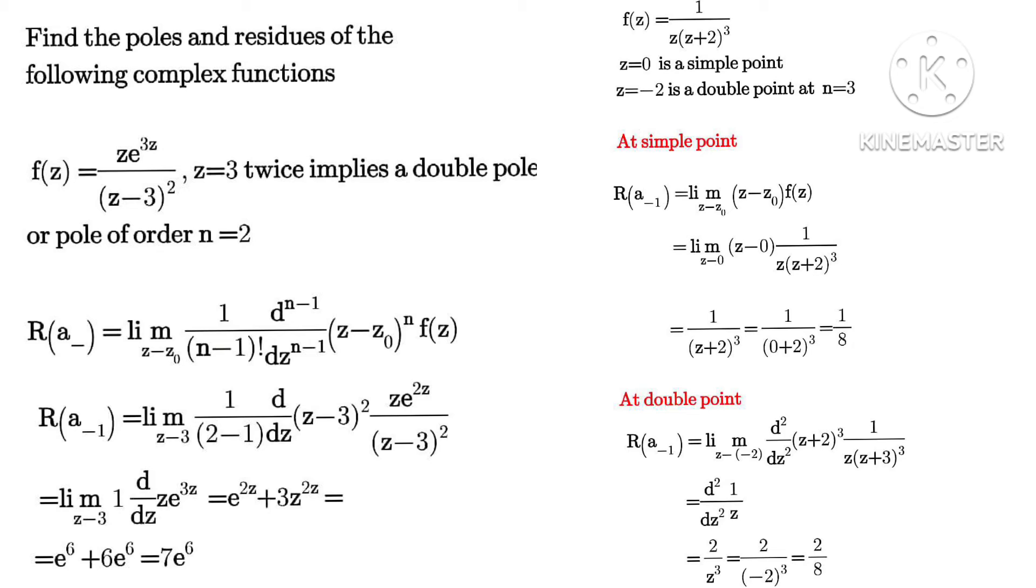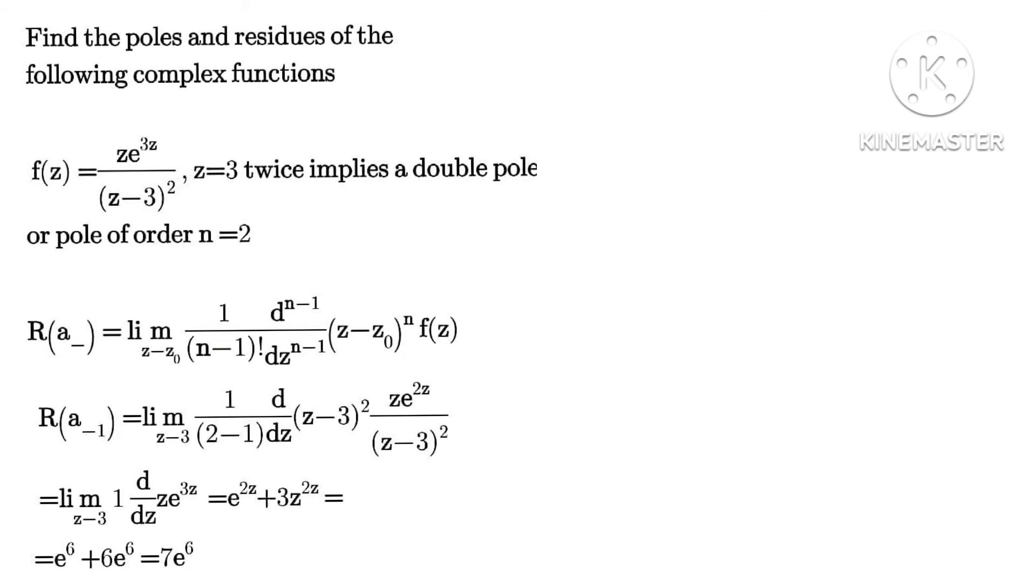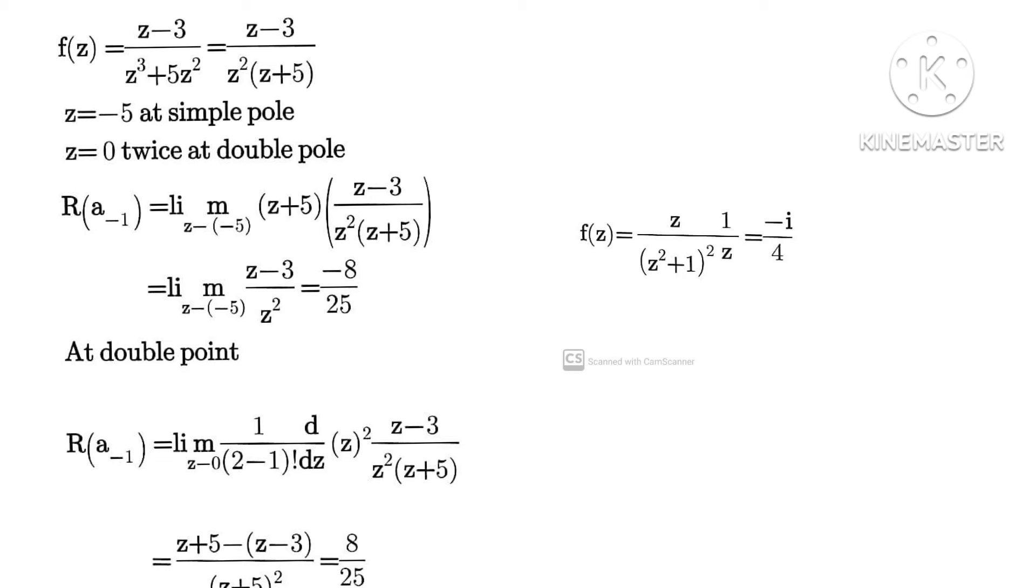write it. So that is it. So continue with other examples. We have our last example to be (z minus 3) over (z cubed plus 5z). So we are factorizing out z squared, we have...